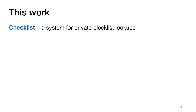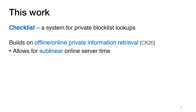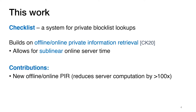In this work, we address this problem by designing and building Checklist, a system for private blocklist lookups. Checklist builds on a new type of private information retrieval called offline-online private information retrieval, which we introduced in our work last year. The main benefit of offline-online PIR is that it allows the server to respond to client queries in time sublinear in the database size, as opposed to linear time as with traditional PIR schemes. In this work, we design a new offline-online PIR scheme that further reduces the server computation by more than 100x compared to our previous work.